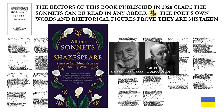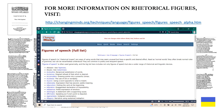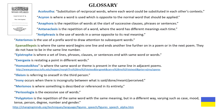The editors of this book published in 2020, Sir Stanley Wells and Dr. Paul Edmondson, claim the sonnets can be read in any order. I hope I have proven that the poet's own words and rhetorical figures prove that they are mistaken. For more information on rhetorical figures, visit changingminds.org. Here is a glossary showing all of the rhetorical figures found in these poems. If you are going to use epanodilepsis or homo stoikos in a paper or presentation, please credit me — because like the original author of these sonnets, it would be nice to get credit.